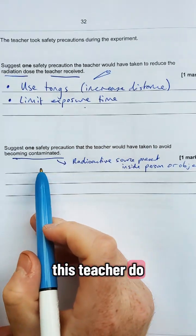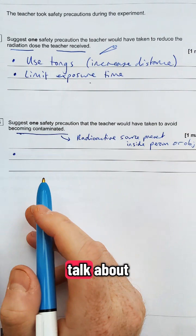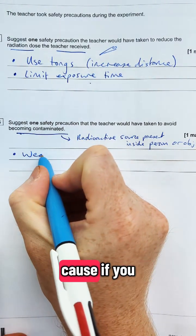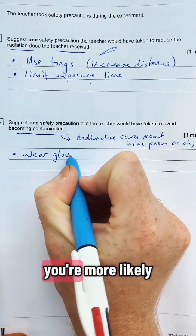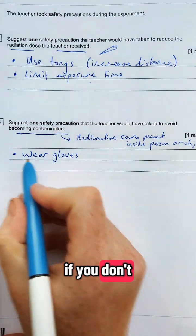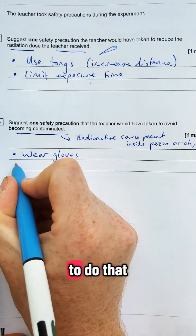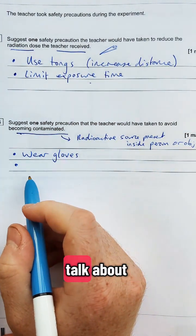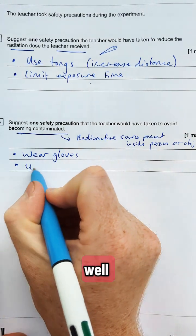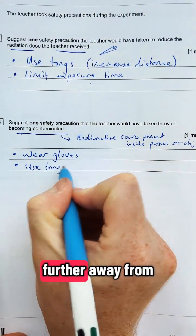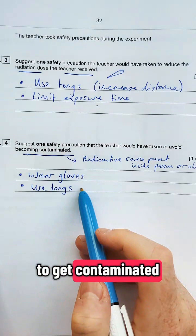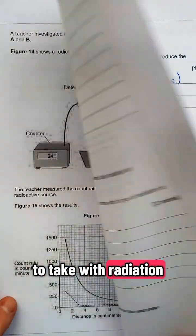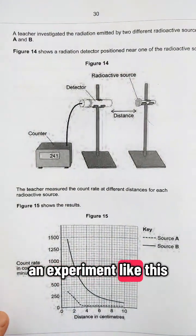So what can this teacher do to stop that source getting inside them? One of the things you could talk about is wearing gloves, because if you get the source on your bare hands, you're more likely to eat it. If you wear gloves, you're less likely to do that. You could also talk about tongs here as well, which is quite nice, because the idea is if it's further away from your hand, you're less likely to get contaminated with it. So those would be some precautions to take with radiation when you're doing an experiment like this.